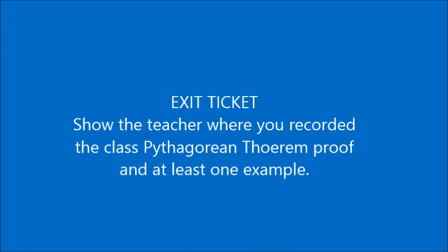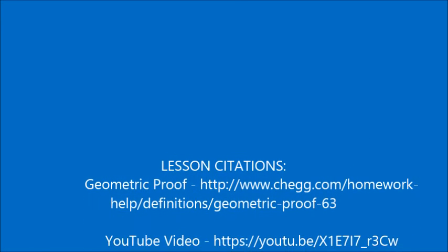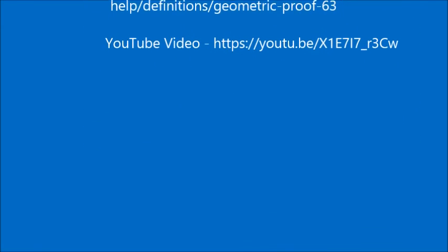Today for your exit ticket, you are going to show me where you have written the class proof of the Pythagorean theorem in your warm-up notebook. Remember, I want you to have the sentence as well as an example jotted down with pictures and numbers. For tomorrow, when you come into class, you should be prepared to write out our class version of the Pythagorean theorem proof. You will also have to show me an example of the Pythagorean theorem. You will be able to use your warm-up notebook, so do not panic. It is open notes. We are just going to practice again tomorrow. Take just a moment now to collaborate with your table partner. Make sure you both have all the pieces of the proof written down.